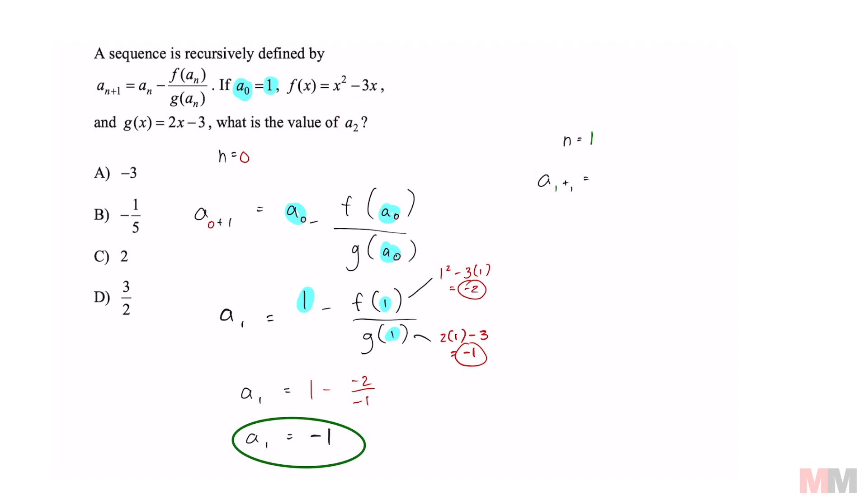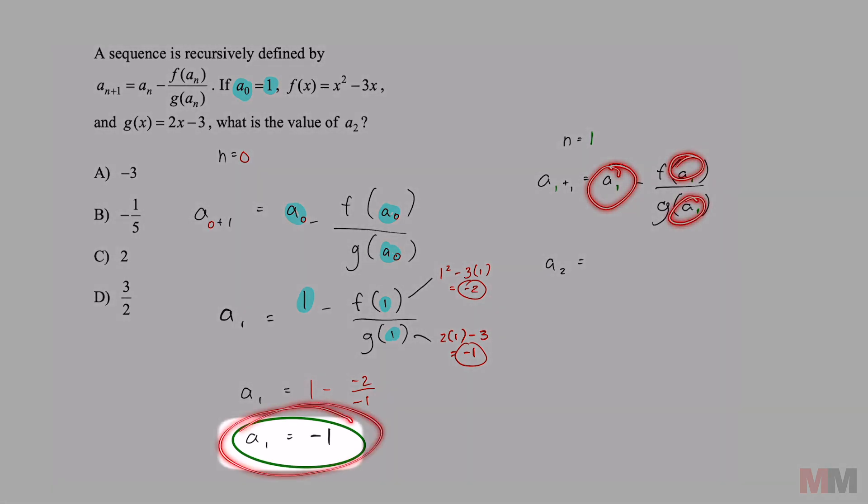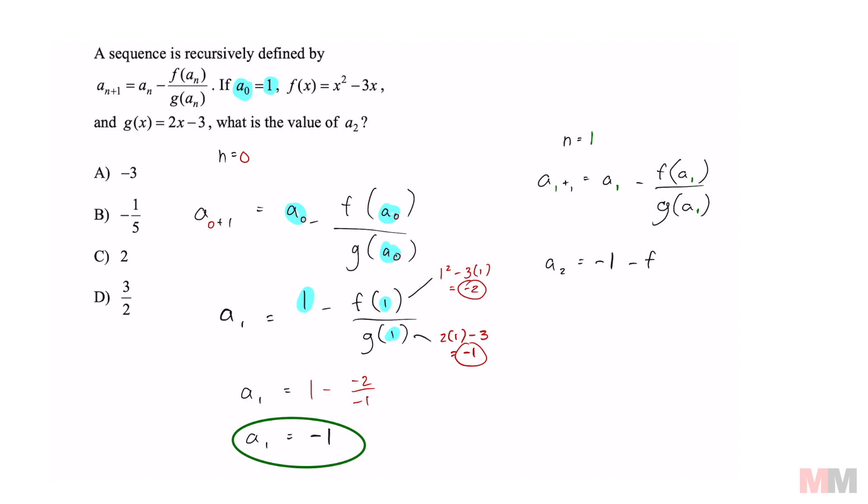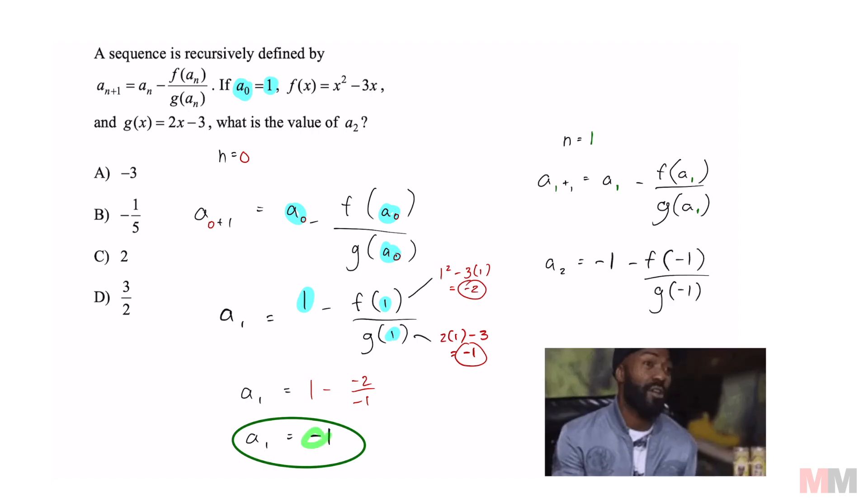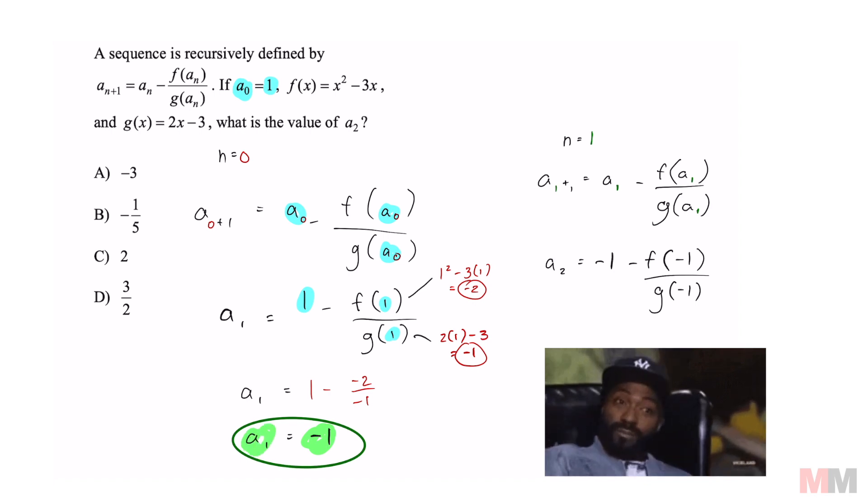So it's going to be very similar to these steps. We're going to replace n as 1 in this right side of this equation, and we're slowly going to get a sub 2. So that's going to equal 2 right there. And check out this magic. We have the value for a sub 1 because we just did it right here. So that's going to equal negative 1 minus f of negative 1 over g of negative 1. And once again, we got that information right there.